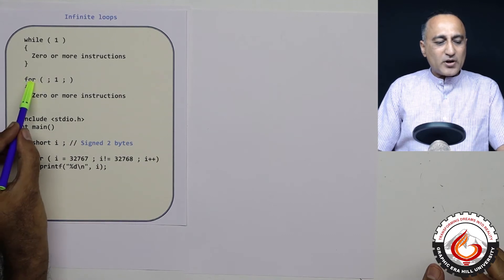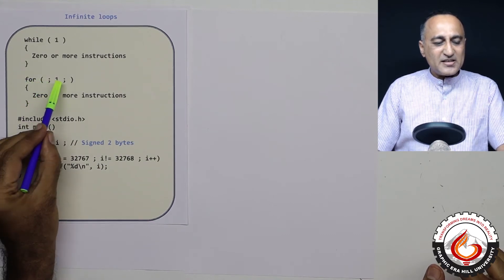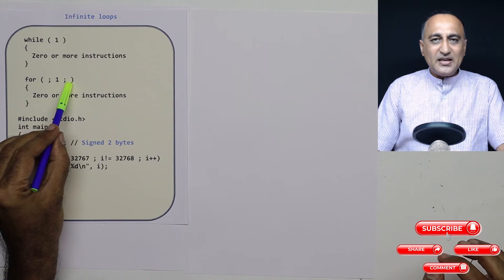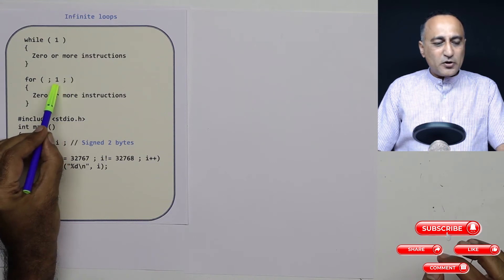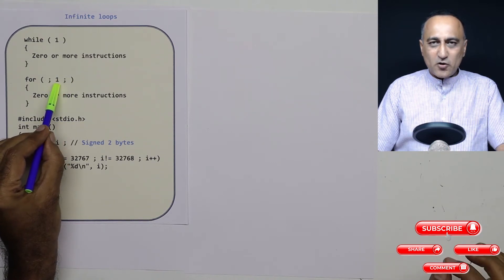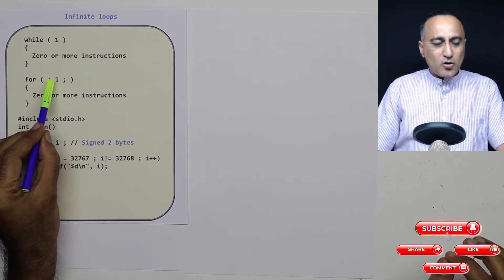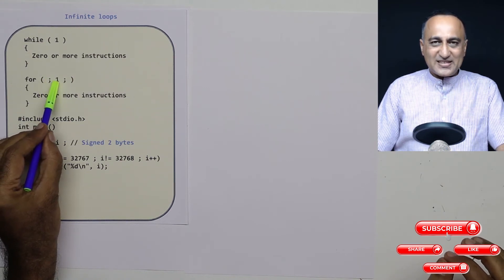Similarly, in the for loop, what I have done is I have not done any initialization, not done any increment or decrement. I put a constant one where the test condition exists.